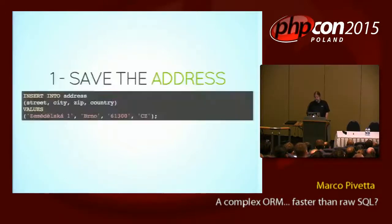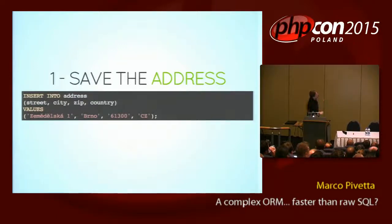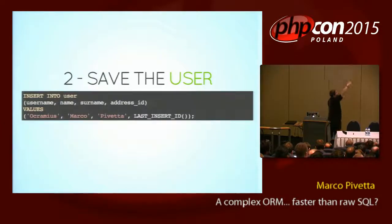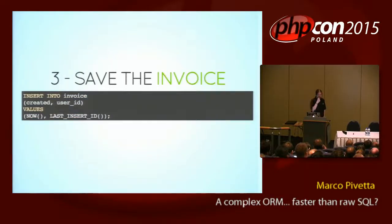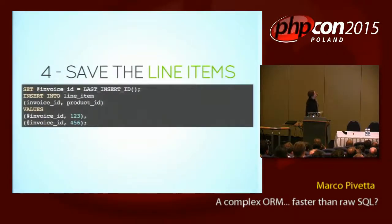Let's do it with SQL just for a second. First of all, I save the address — I insert some stuff. Then we save the user. I'm going to use LAST_INSERT_ID in MySQL. You see there are dependent operations — the order depends on the previous operation. Now I'm going to save the invoice, which is again using LAST_INSERT_ID. Then I save the line items. Let's say that I have two line items that I insert in the invoice.